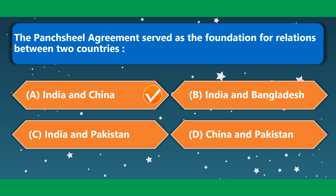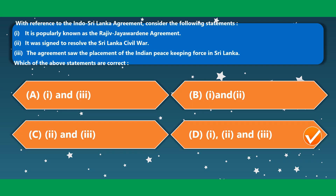The Pansil agreement served as the foundation for relations between two countries — India and China. The correct option is option A. With reference to the Indo-Sri Lanka agreement, it is popularly known as the Rajiv-Jayewardene agreement — correct. It was signed to resolve the Sri Lanka civil war — correct. The agreement saw the placement of the Indian Peacekeeping Force in Sri Lanka. The correct option is option D.